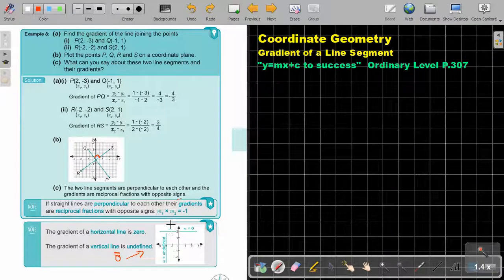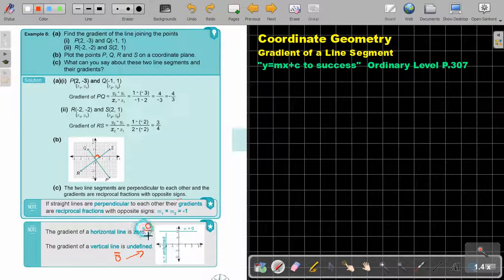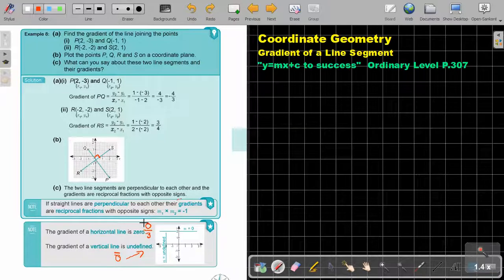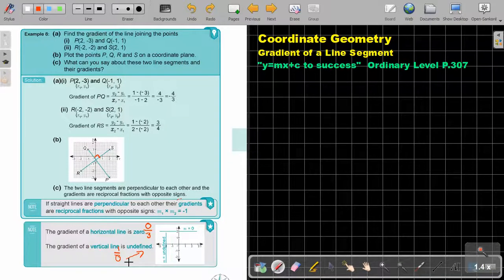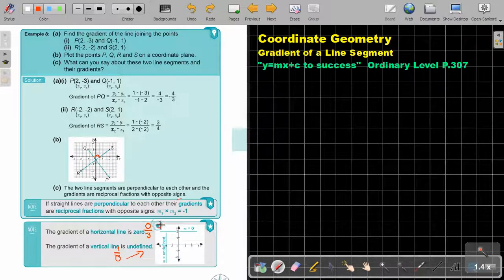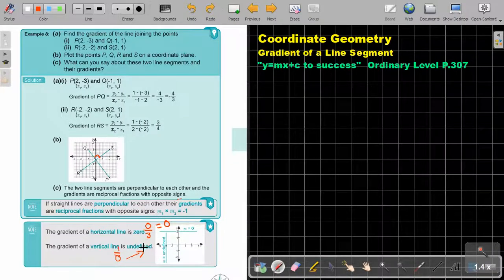So 0 can be on top. And say for example there's 3. Then it's defined. But if 0 is at the bottom then it's going to be undefined. So this will just be equal to 0 and this will be undefined. Let's go on.